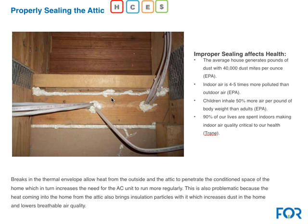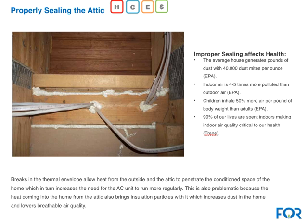Whether we seal from the attic or the interior depends on access — sometimes the attic is easier, sometimes it isn't. Either way, we can do a good job stopping airflow. Also, go under the kitchen and bathroom sinks and find where the pipe penetration goes into the wall — there's almost always a gap there. Nine times out of ten you're going to find this gap where airflow passes back and forth, and we can seal that up from inside the house.